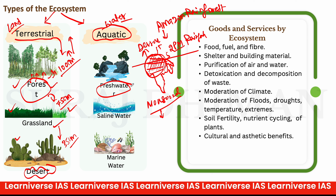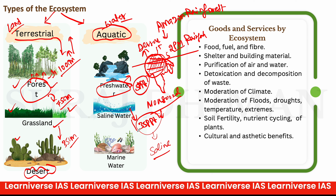Aquatic ecosystems में fresh water होता है जहाँ salt concentration 5 PPT (parts per thousand) के पास होती है — यही पीने वाला पानी है। Saline water में 35 PPT के आसपास salinity होती है इसलिए यह पिया नहीं जा सकता। Marine water भी saline water ही माना जाता है। ये aquatic systems होते हैं।